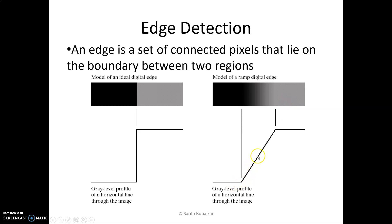The edge profile becomes a ramp — instead of a sharp transition, the gray level changes gradually and then becomes gray. The sharp transition edge is transformed into a ramp or slope. Due to this, when real world images are captured by a camera, we don't have a step edge. The step edge becomes a ramp edge because of the anti-aliasing filter.